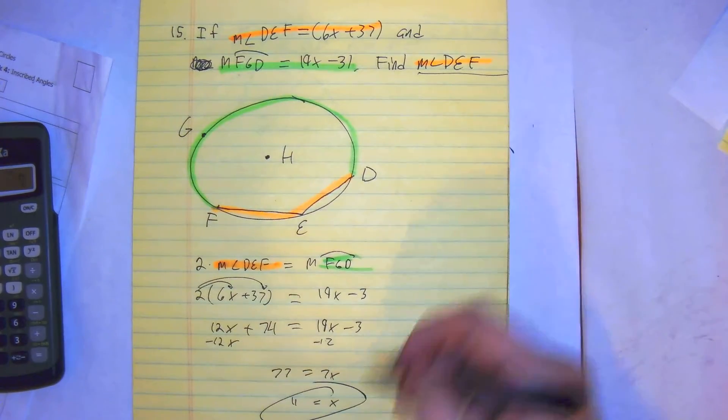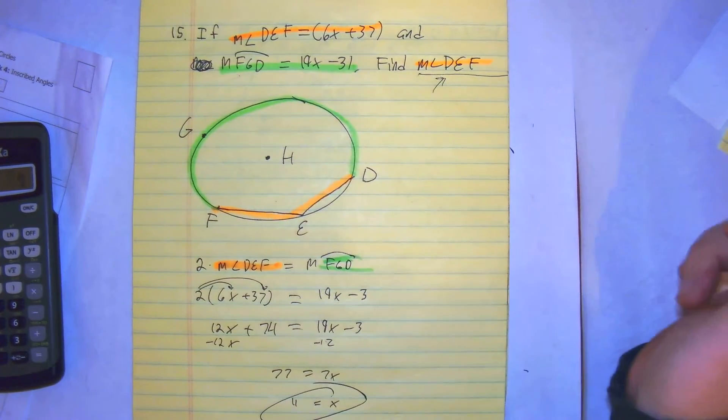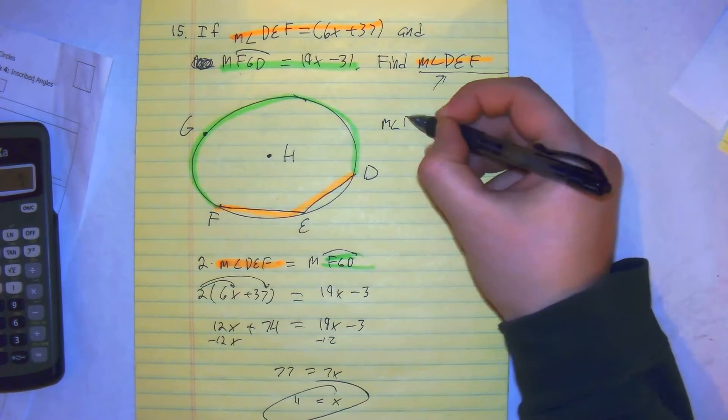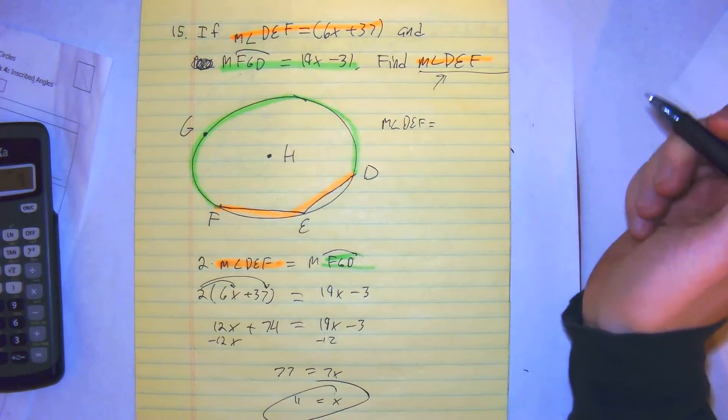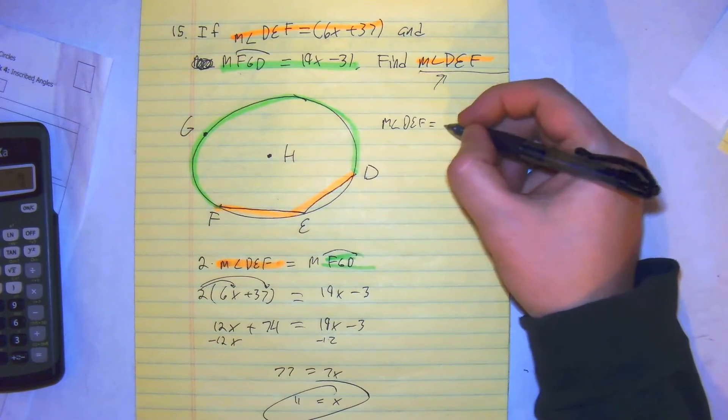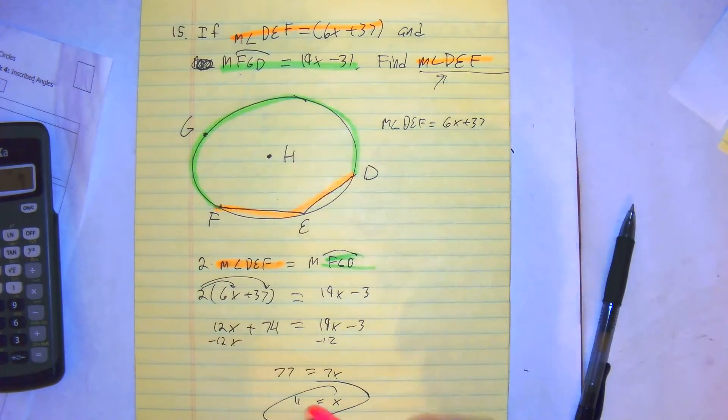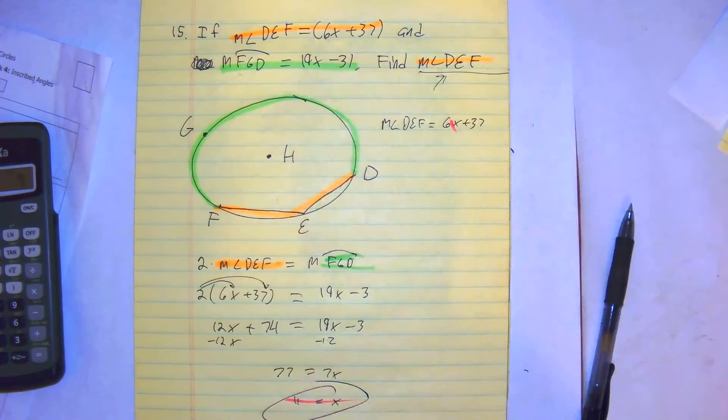We're not done, because they want us to find the measure of DEF. The measure of DEF is equal to 6x plus 37. But now that we've found the value of x, plug it in.